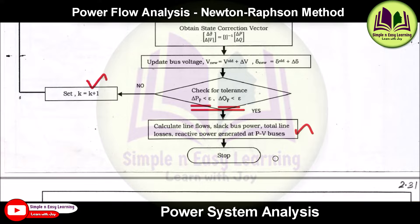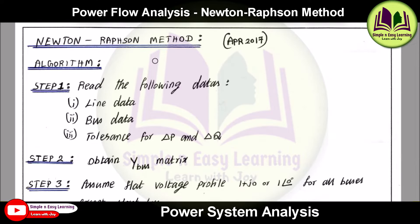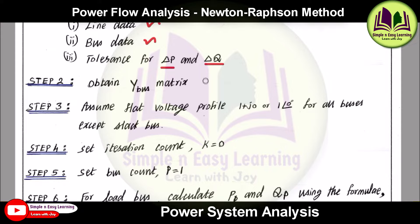This completes the flowchart of the Newton-Raphson method for the power flow solution. Now we look at the algorithm. Step 1: read line data, bus data, and the tolerance values delta_P and delta_Q. Step 2: obtain the Y-bus matrix.